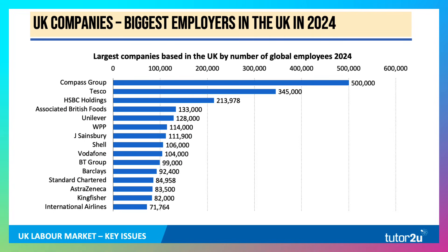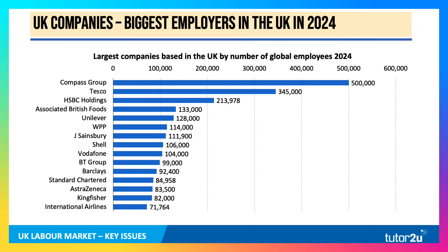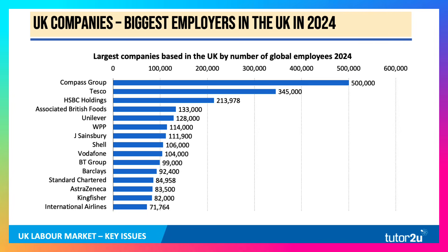With trade union membership falling, you've also seen the rise of big employers. This is something worth revising ahead of your labour market paper — the rise of monopsony employment. This chart shows the largest companies based in the UK by number of global employees in 2024. Some of these employers will be located outside the UK. Compass Group is one of the world's largest outsourcing companies, providing a range of business services.